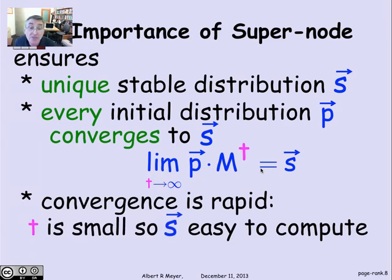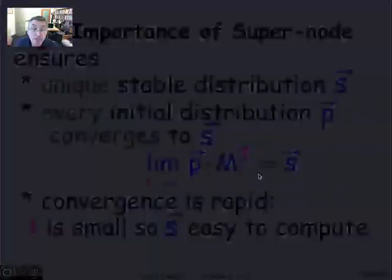And as a matter of fact, the convergence is rapid. What that means is that you can actually calculate the stable distribution reasonably quickly, because you don't need a very large t in order to arrive at a very good approximation to the stable distribution.